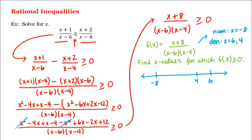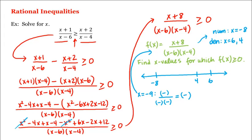Alright, let's start with the first interval. We can choose x equal to negative 9, for example. And if we plug negative 9 into the factored form of f, we have negative 9 plus 8, which is a negative number, divided by negative 9 minus 6, which is a negative number, times negative 9 minus 4, which is also a negative number. And negative divided by negative times negative is negative, which means in this first interval, f is negative.